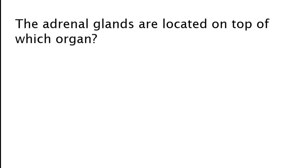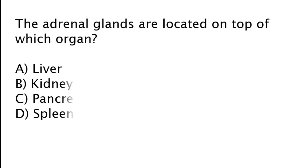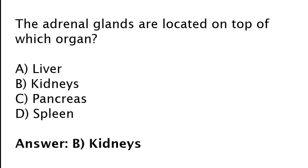The adrenal glands are located on top of which organ? Liver, kidneys, pancreas, or spleen? The correct answer is option B. The adrenal glands are located on top of the kidneys.